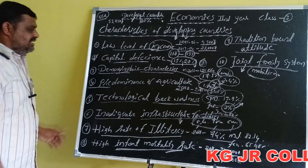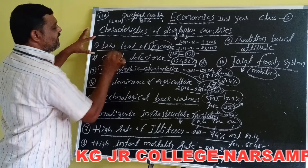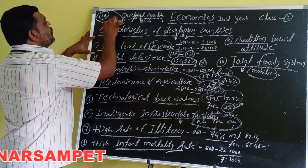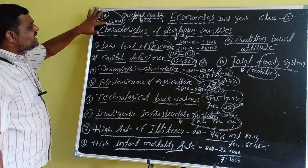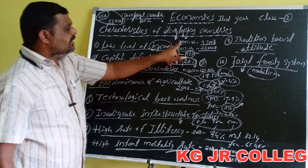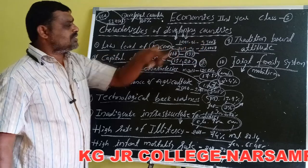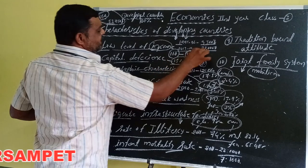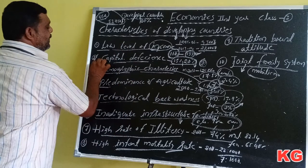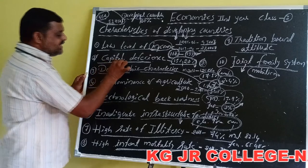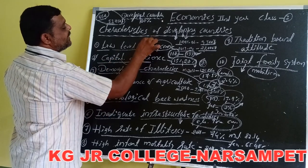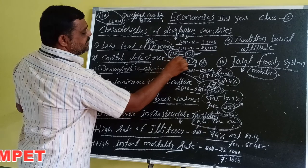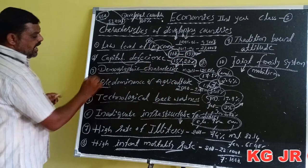To summarize the main characteristics: the main character is low level of income. Compared to USA's 53,750 dollars, India had just 9,300 rupees in 1995–96 and 22,000 rupees in 2013–14, ranking 110th worldwide. Capital deficiency is also key — saving capacity is only 15% to 20% due to low per capita income.